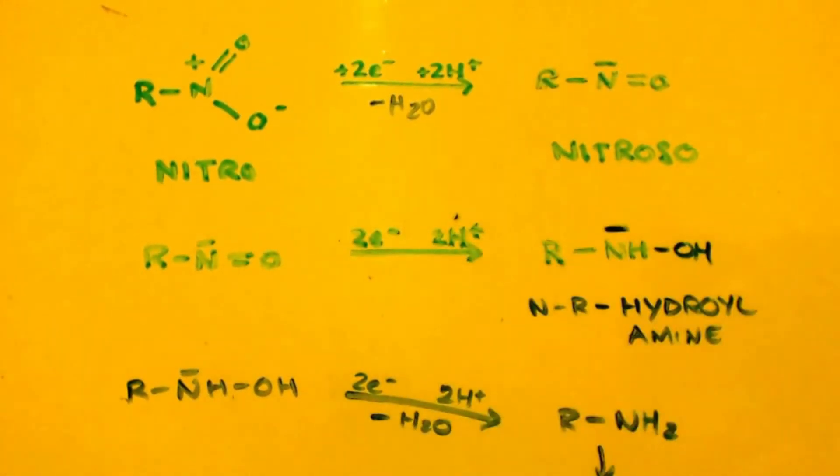So where do these electrons come from? They come from metal. In our case we're going to use iron. Every example I've ever seen of them talking about alkyl, nitro alkanes, they're always using iron as the metal and acetic acid as the acid, because the protons come from an acid.